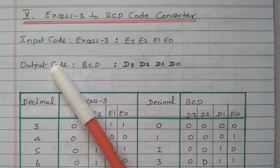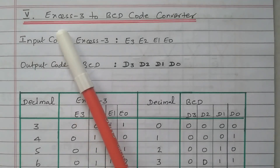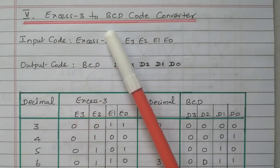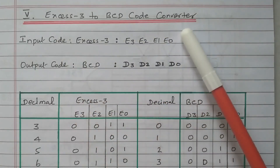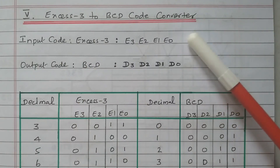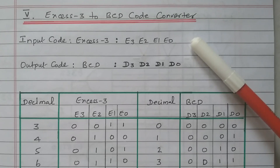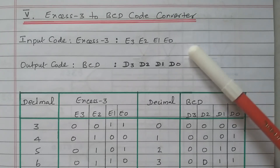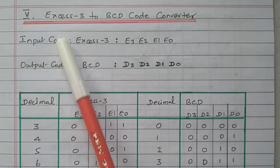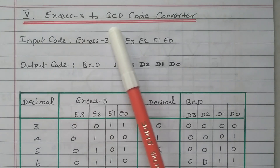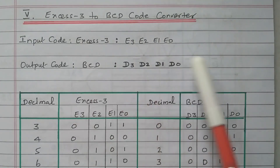In this video, we will see the XS3 to BCD code converter. Subscribe the channel for more videos and notifications. Soft copy of this material is available in the drive — the link is given in the description box. Now we will go to the topic: XS3 to BCD code converter.